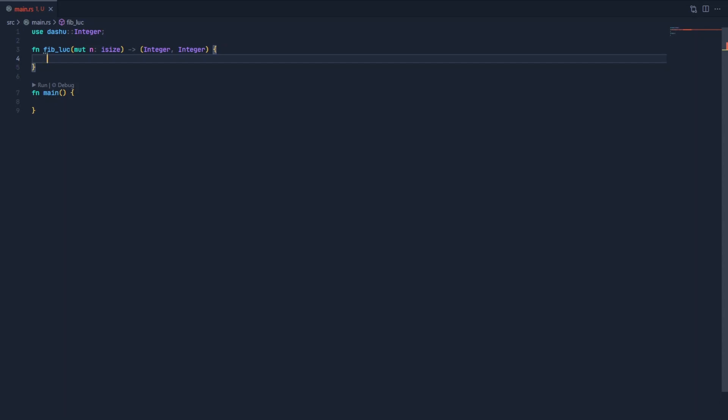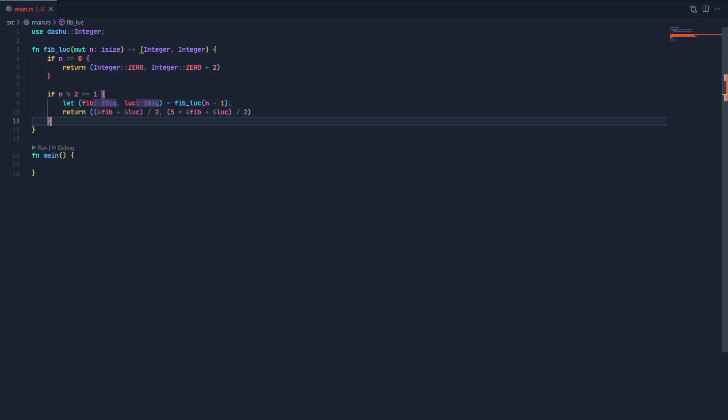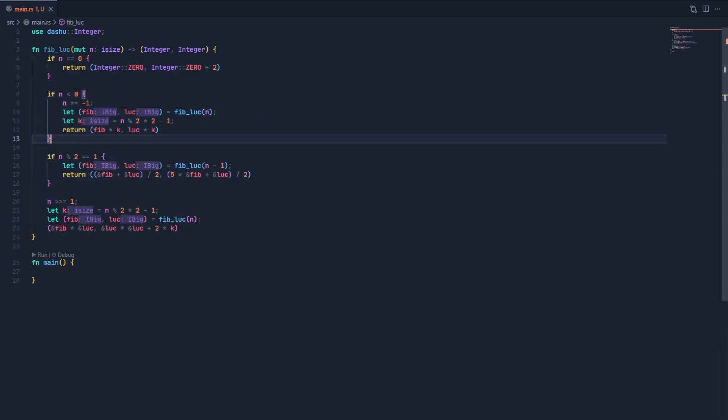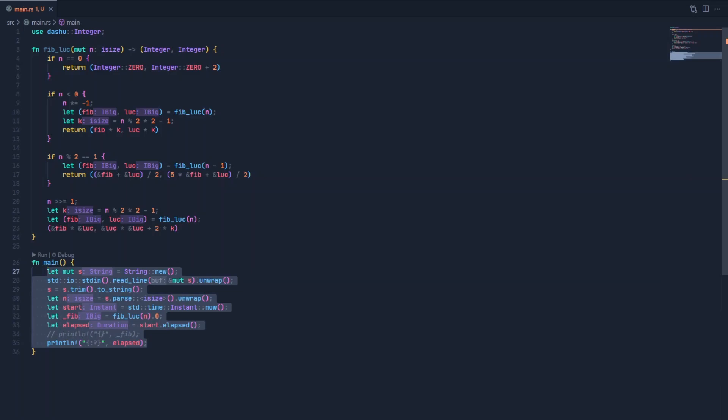Our function is very simple: we first define the base case of 0, then code the increment formula for odd inputs, and finally implement the doubling formula. Optionally, we can also include support for negative numbers. All that's left to do now is to check in some driver code that can time our function.